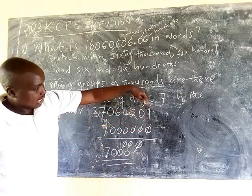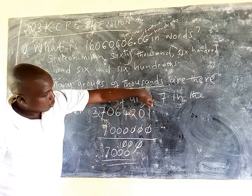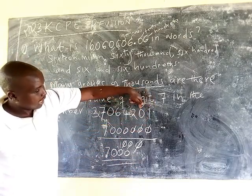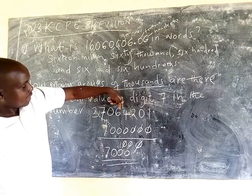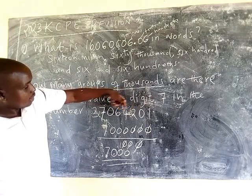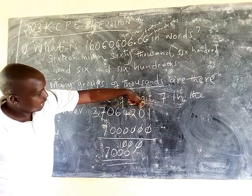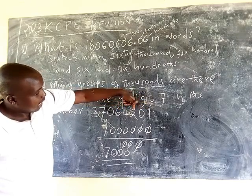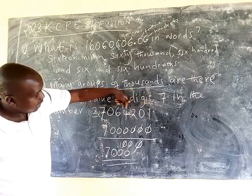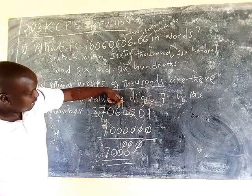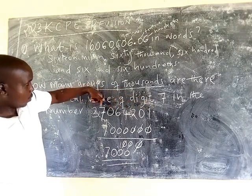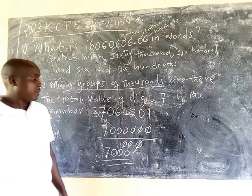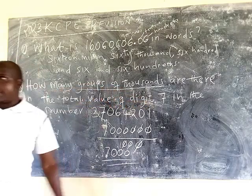You start counting from the right side: ones, tens, hundreds, thousands, ten thousands, hundred thousands, one million. So the answer is 7,000 groups.